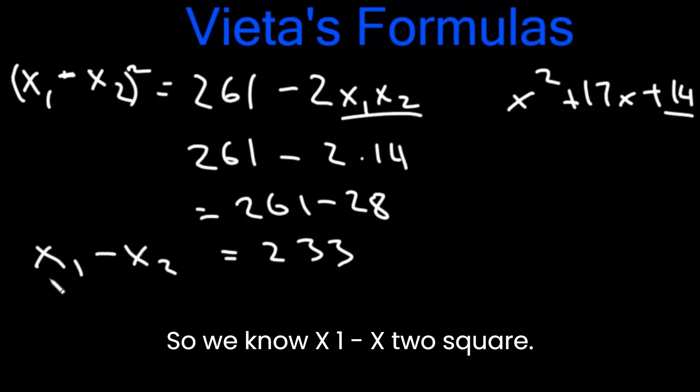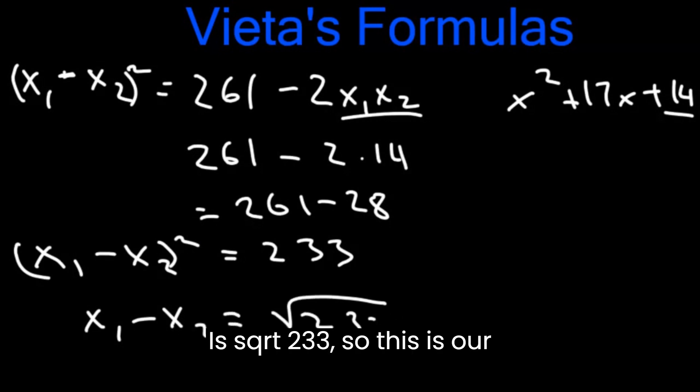We know x1 minus x2 square is 233. So x1 minus x2 is square root 233. So this is our final answer.